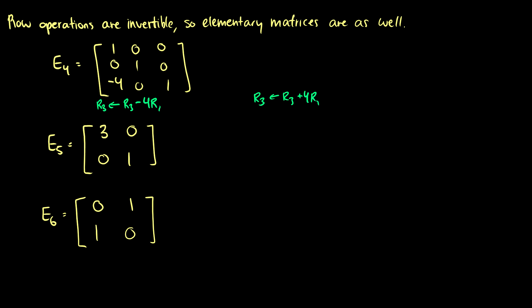So we want to take it back to where it was. This inverse is going to look like: we have 1s in our diagonals, and then instead of a minus 4 for our bottom left entry, we're going to have a plus 4. So that's going to take our row 3 and add 4 of row 1 to it, so it's going to be invertible. We can call this E4 inverse.